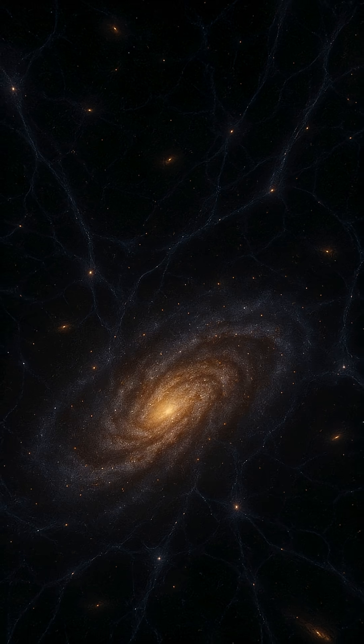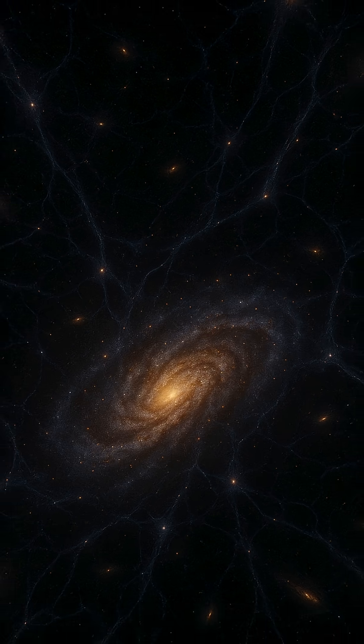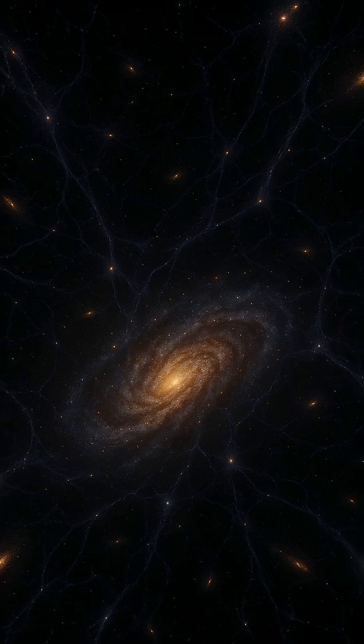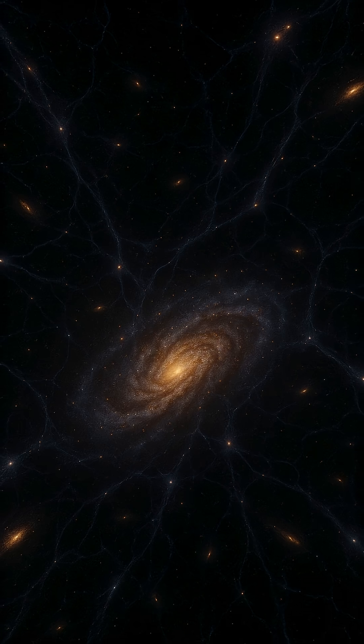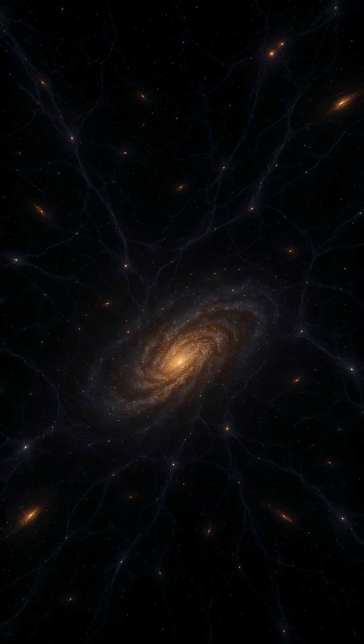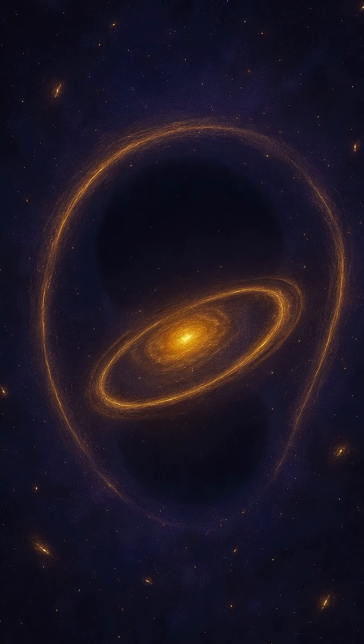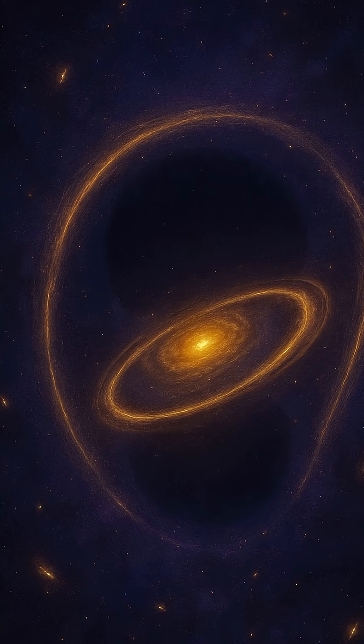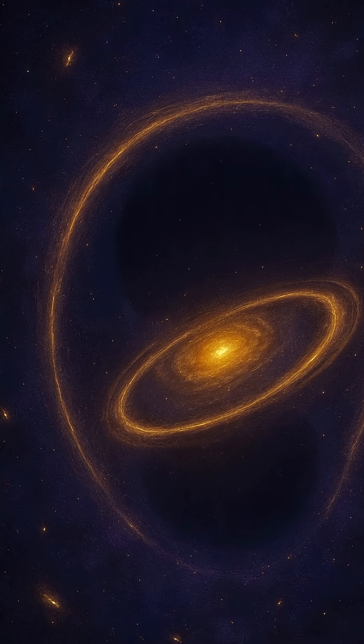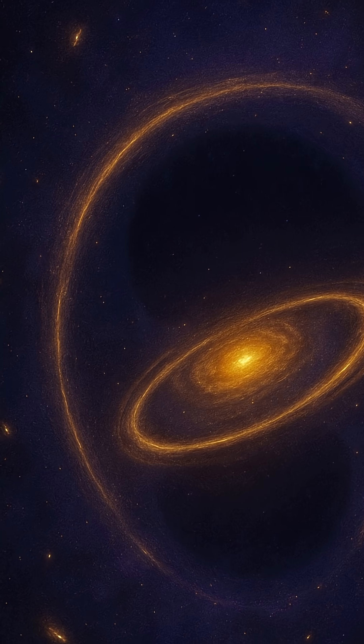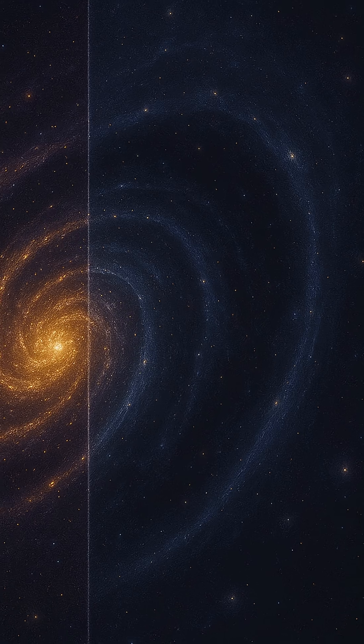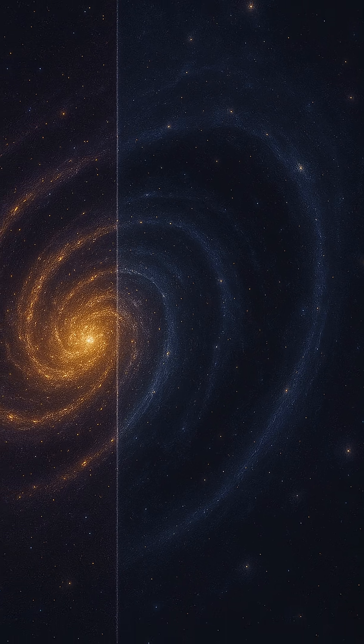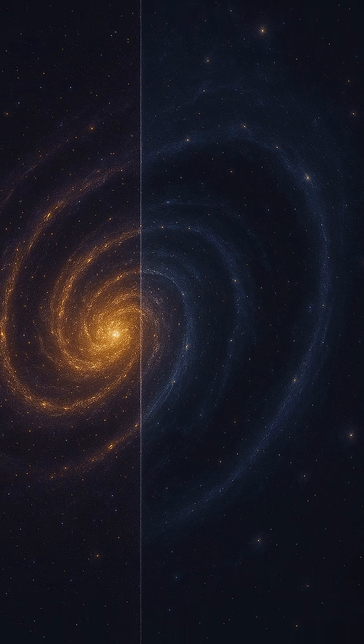The first hints of dark matter emerged from galaxy rotation curves. When astronomers measured how fast stars orbit the centers of galaxies, they expected the outer stars to move more slowly, as per Newtonian physics. But surprisingly, those stars rotated just as fast as the inner ones. The only explanation? There had to be an unseen mass—something invisible yet gravitationally powerful—holding those galaxies together.